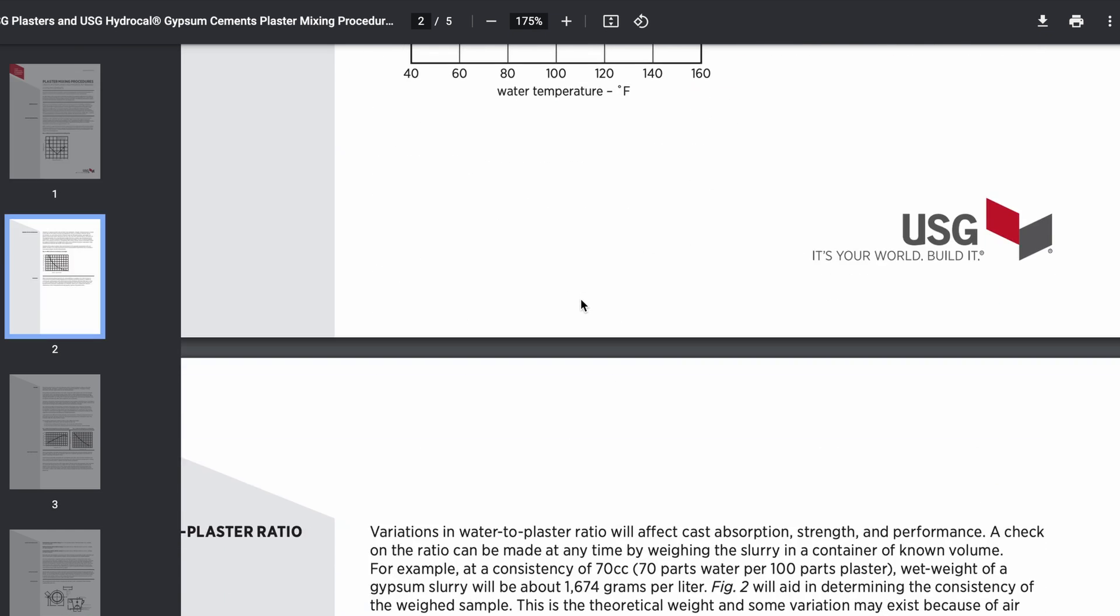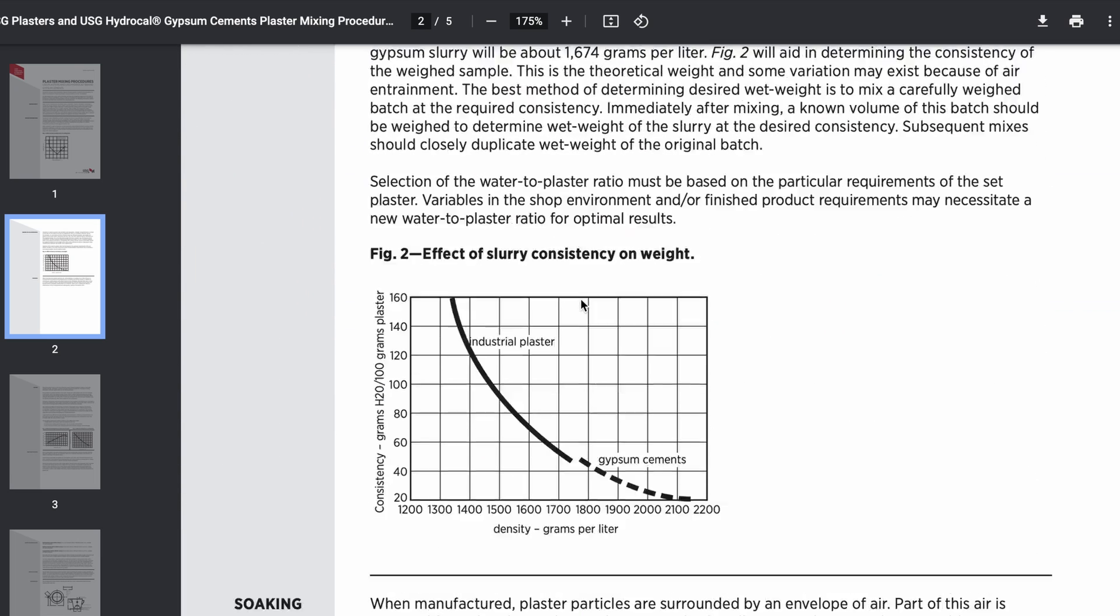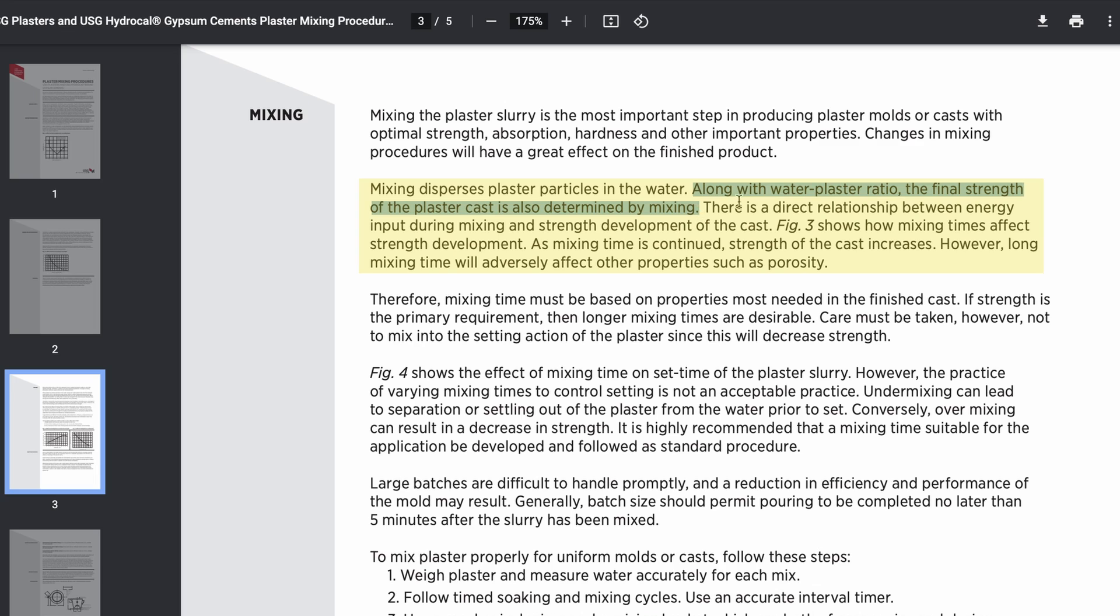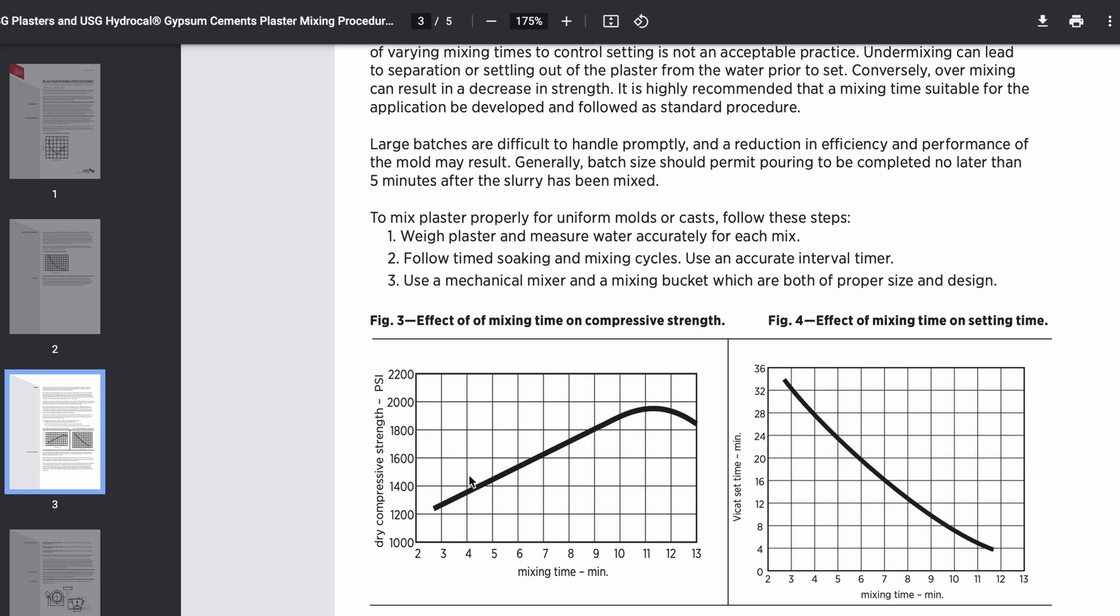And then going back to this data sheet, the other thing is around mixing time. So it says, along with the water-plaster ratio, the final strength of the plaster cast is also determined by mixing. There's a direct relationship between energy input during the mixing and strength of development cast. And it talks about this figure down here. So basically, this is the strength. And the longer we mix it, the stronger it gets up to, it looks like, 11 and a half minutes or so.